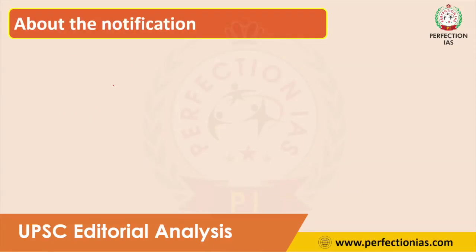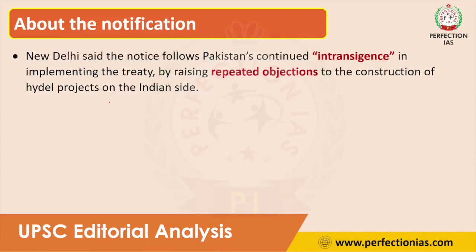India had sent a notification because, according to India, Pakistan is not properly following the treaty. Pakistan is repeatedly raising objections to the construction of hydro power plants on India's side. India is constructing some hydro power plants on west-flowing rivers, which is accepted under the Indus Water Treaty, but Pakistan is repeatedly raising objections. Because of this, India sent a notification to Pakistan to modify the treaty.